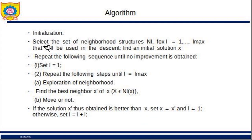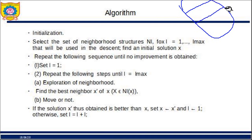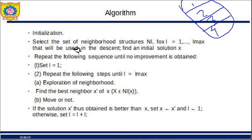For the algorithm initialization, we need to select the set of neighborhood structures, which I call N_l. The problem space is going to be divided into parts — these parts are the neighborhood structures, N_l where l goes from 1 to l_max. In our case l_max is 4. Initially, l will be 1, and we repeat the following steps until l equals l_max, meaning for each neighborhood structure.